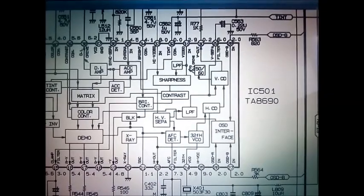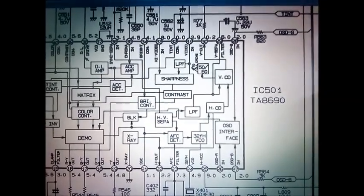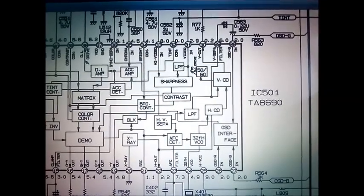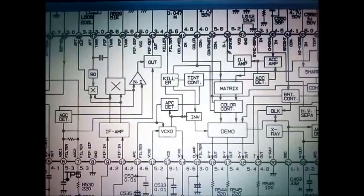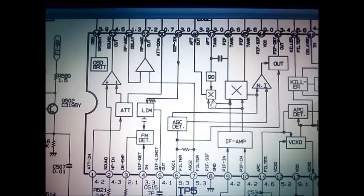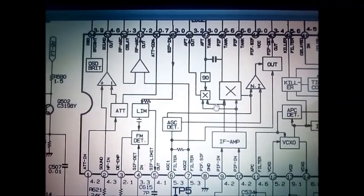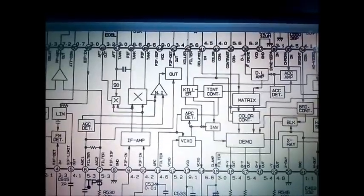Then next check IC501, main IC TA8690. This pin number 1, 2, 3, 4, these are all voltages. Then we have to check these voltages.